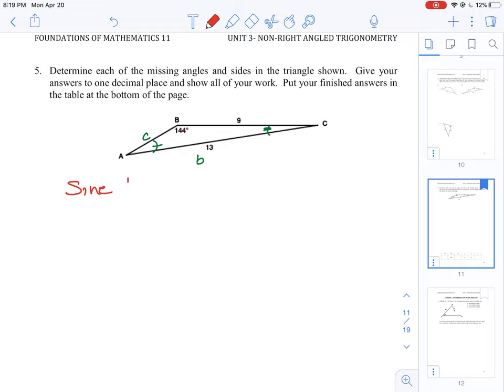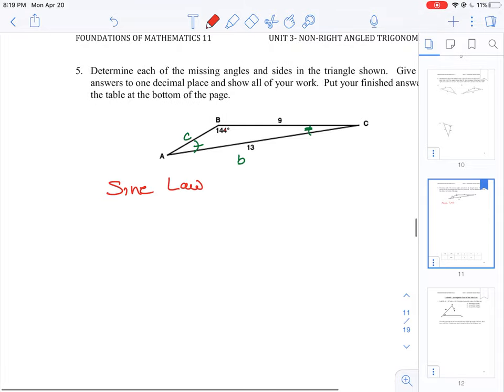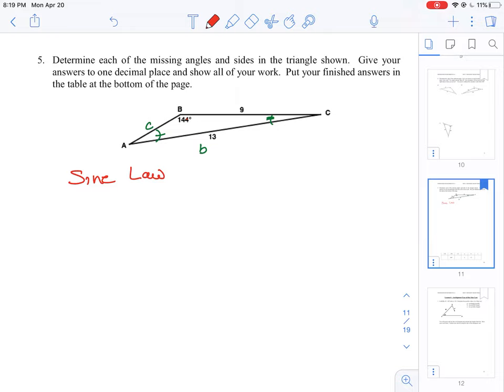So the sine law is basically a ratio of the sine of an angle against its opposite side. We do know one pair: sine B is 144 and we know the length is 13. So that gives us a ratio to compare all other questions with. So let's start looking at what we could find here. Let's try to find angle A, which is the first one right here, because it's opposite of side that we know.